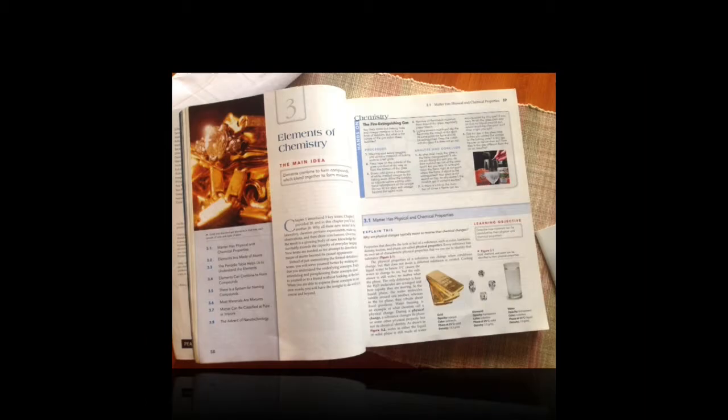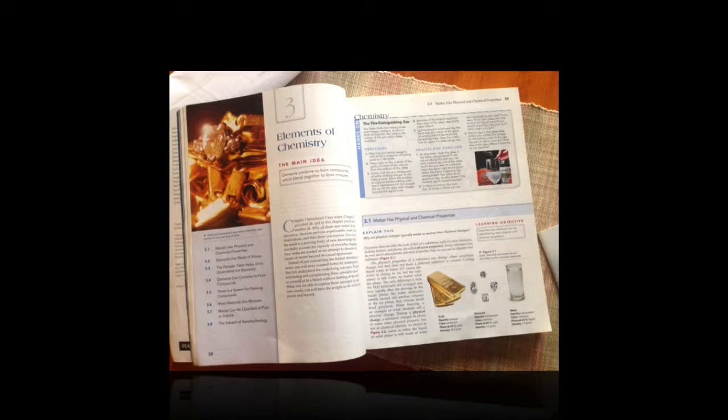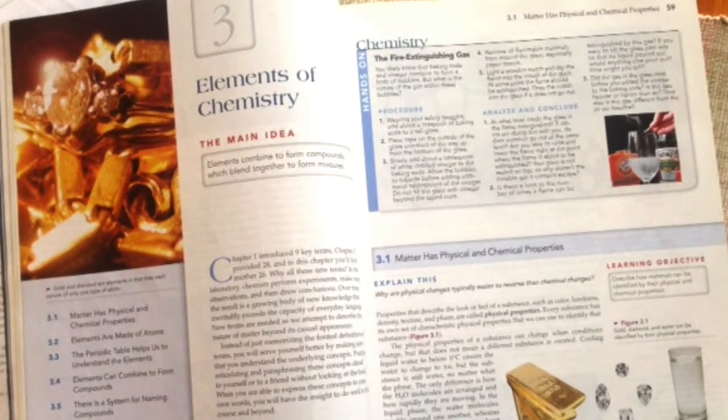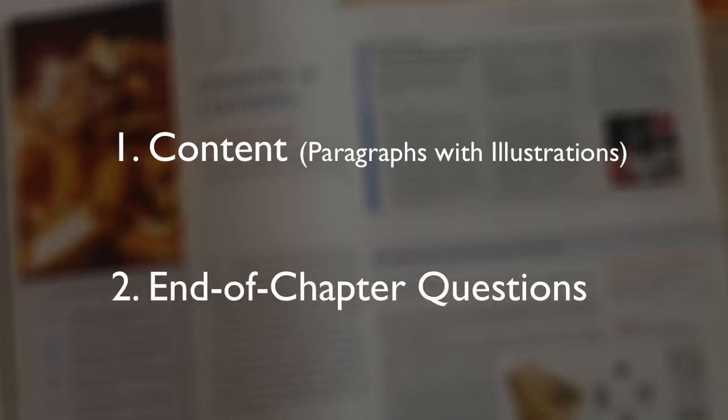The textbook is a bit different, and I understand that many of you may not quite know yet how to study properly from a science textbook. So let me give you a quick tour. Within each chapter, there are two main features. One, the content of the paragraphs and illustrations. And two, what we call the end of chapter questions, EOC for short.